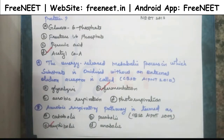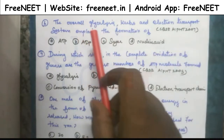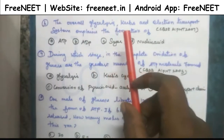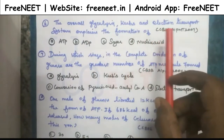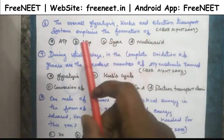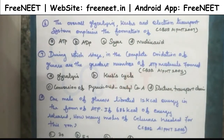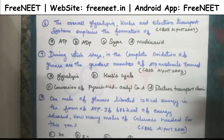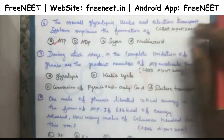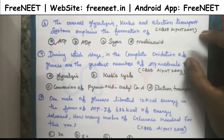It is termed as the amphibolic cycle. The next question: the overall glycolysis, Krebs cycle, and electron transport system explain the formation of — the answer is ATP.